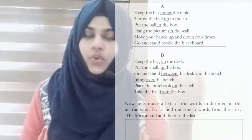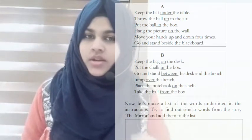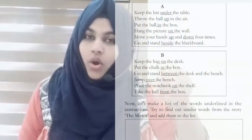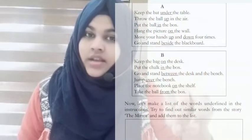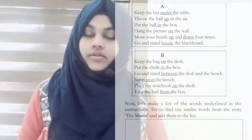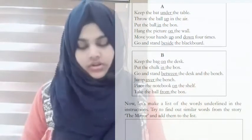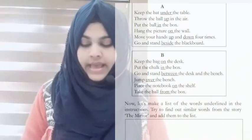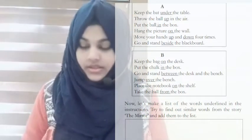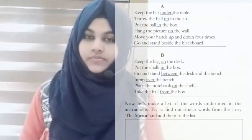Throw the bowl up in the air. Put the bowl in the box. Hang the picture on the wall. Move your hands up and down four times. Then, go and stand beside the blackboard.